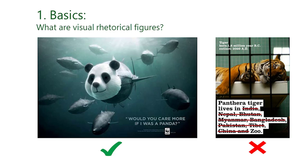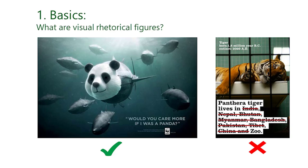So with that being said, let's start with the basics. On this slide, you can see two ads. The ad on the right contains a visual rhetorical figure; the ad on the left doesn't. The ad on the left shows a tiger that is caged in a zoo — this is what we call a straightforward image. Straightforward images are matter-of-fact depictions of reality and can therefore be interpreted literally. In other words, what is shown is also what is meant.